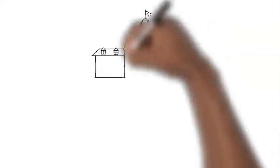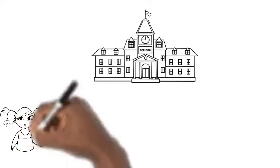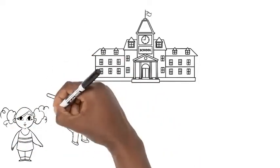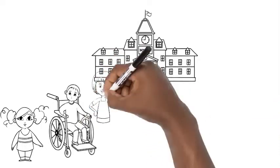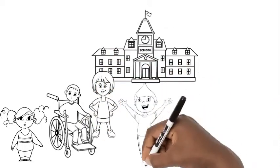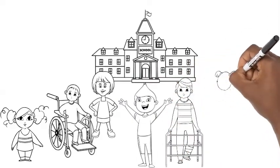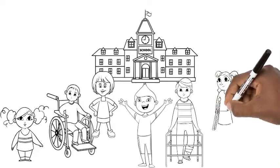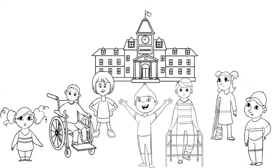When IDEA was first passed, the idea of educating children with disabilities right alongside their non-disabled peers was a radical one, but it was an idea that was very important to many of the advocates who worked on the language in the law. This idea that students with disabilities should be educated in inclusive settings with other children and not isolated is reflected in many of the key components of IDEA.